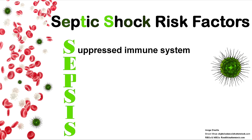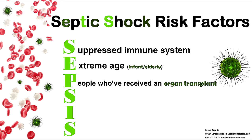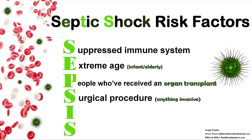Patients with HIV/AIDS, those on immunosuppressive therapy, taking steroids or chemo, pregnant women, and those with malnutrition are all at risk for an altered immune system. E is for extreme age — very young patients like infants and the elderly are at risk. P is for people who've received an organ transplant. S is for surgical procedures — anything invasive that could introduce a microorganism into the body.